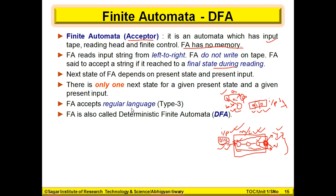FA accepts regular language — Type 3. We have the Chomsky hierarchy through which we can distinguish different kinds of languages. For different kinds of grammar, we have different kinds of languages, and for different kinds of languages we have different machines to accept them. We have Type 3, Type 2, Type 1, and Type 0. Later when we cover Chomsky hierarchy, we will learn why FA is called Type 3.